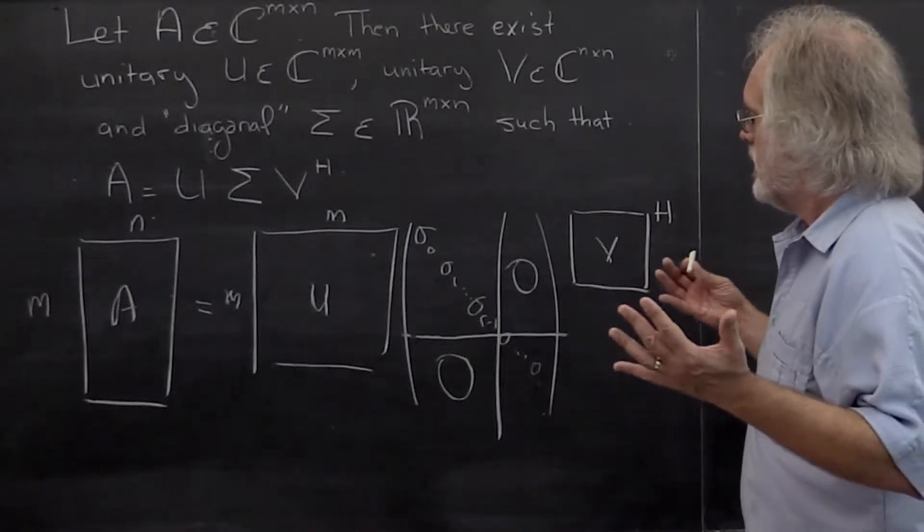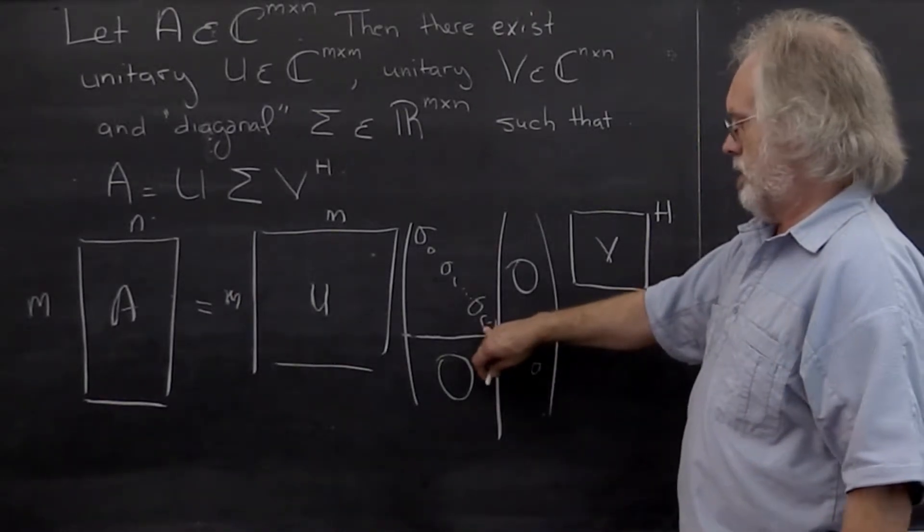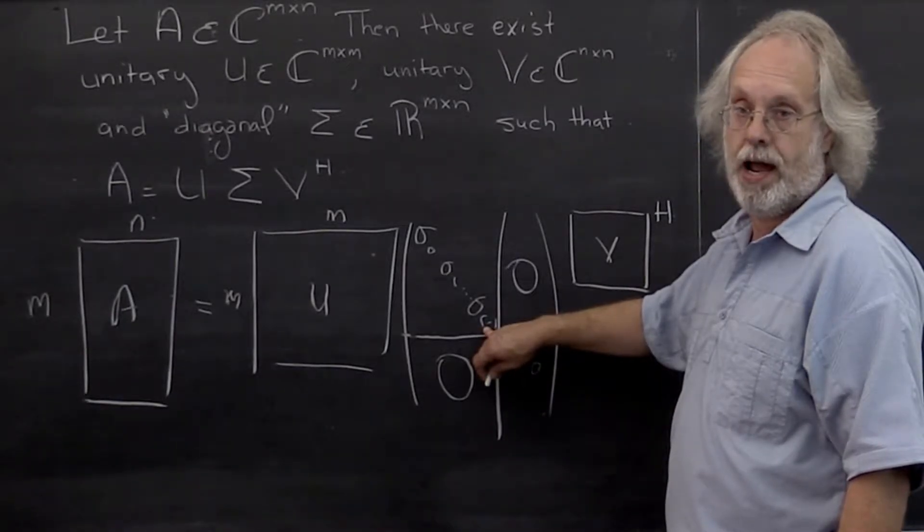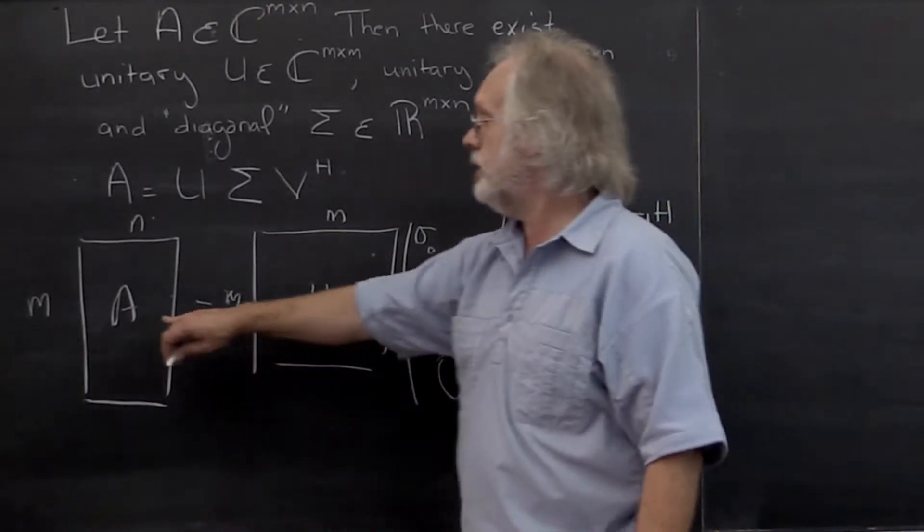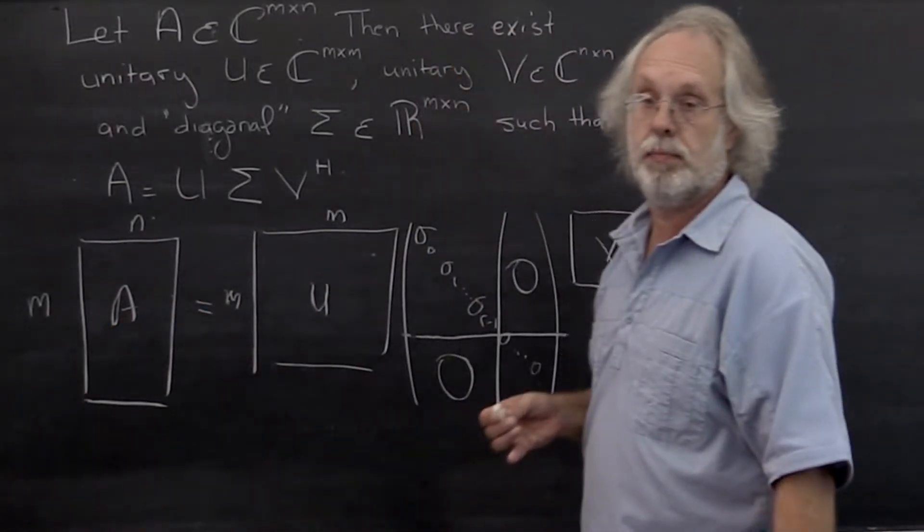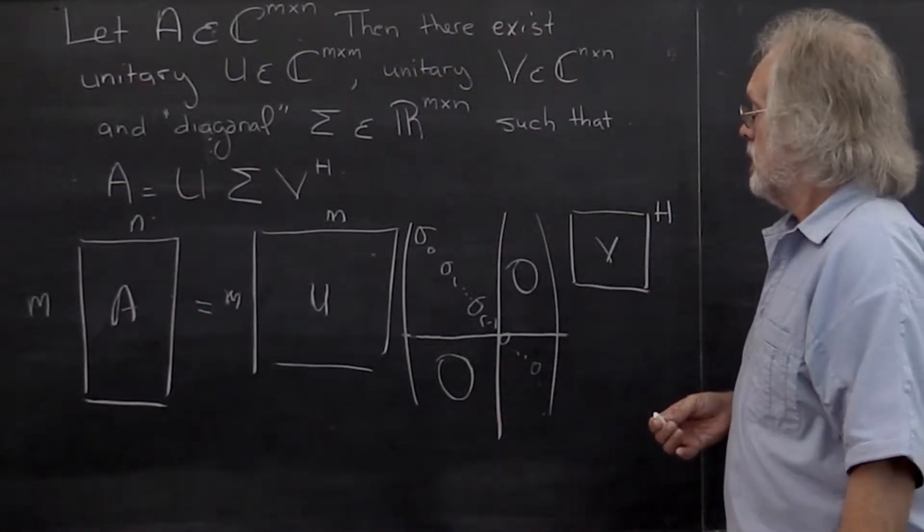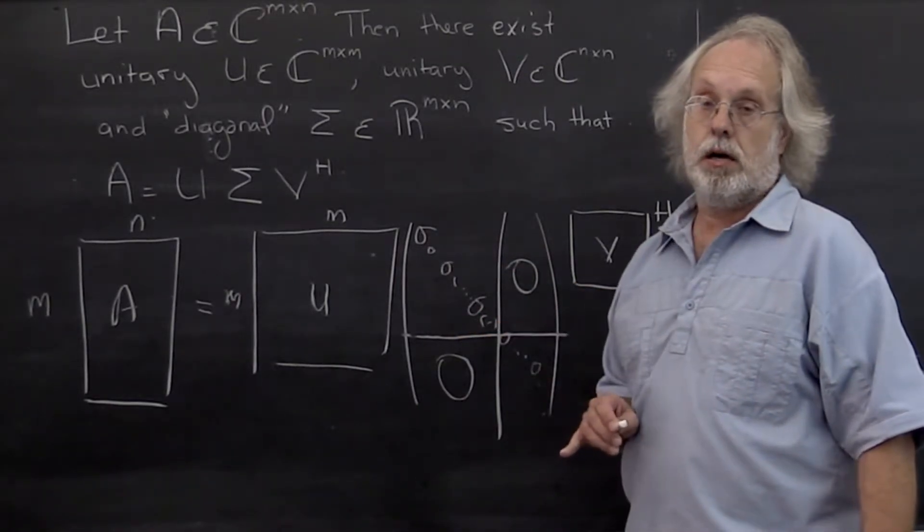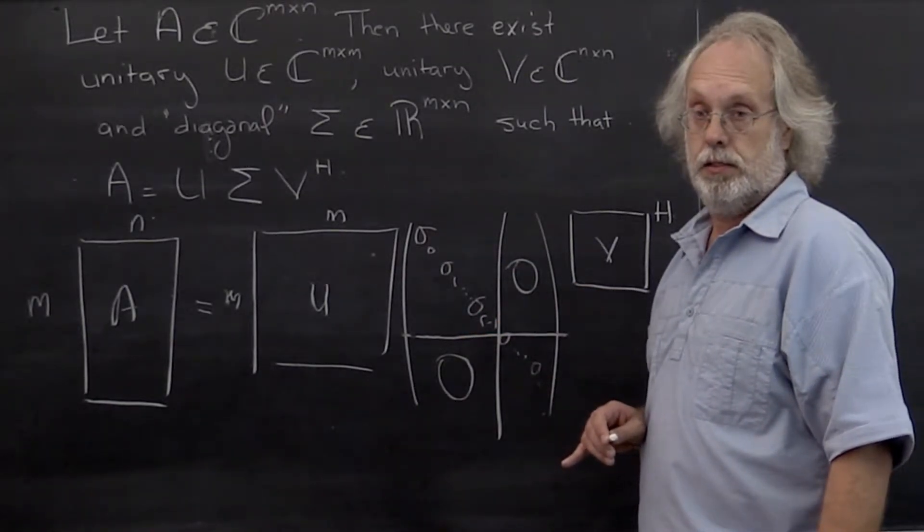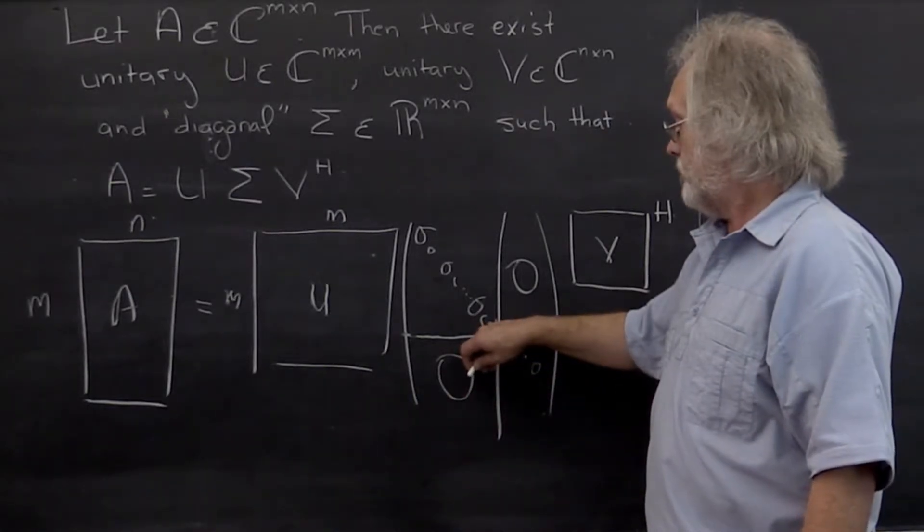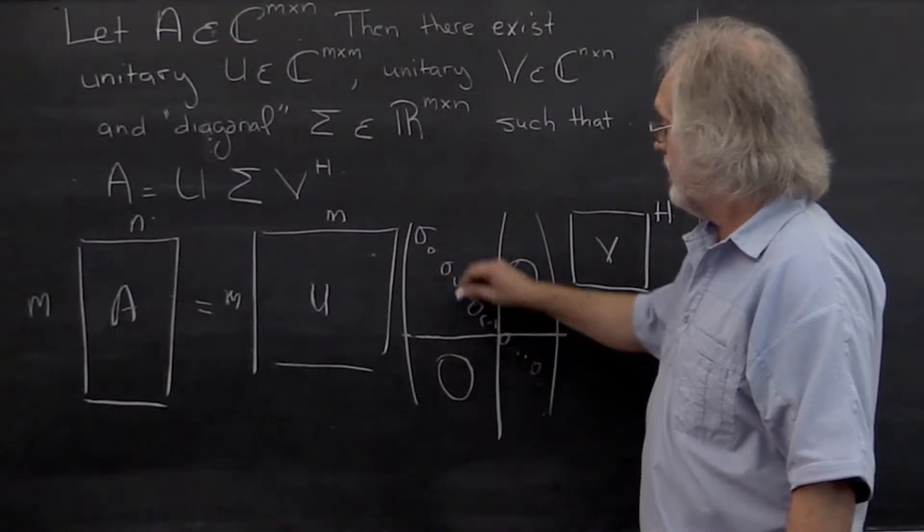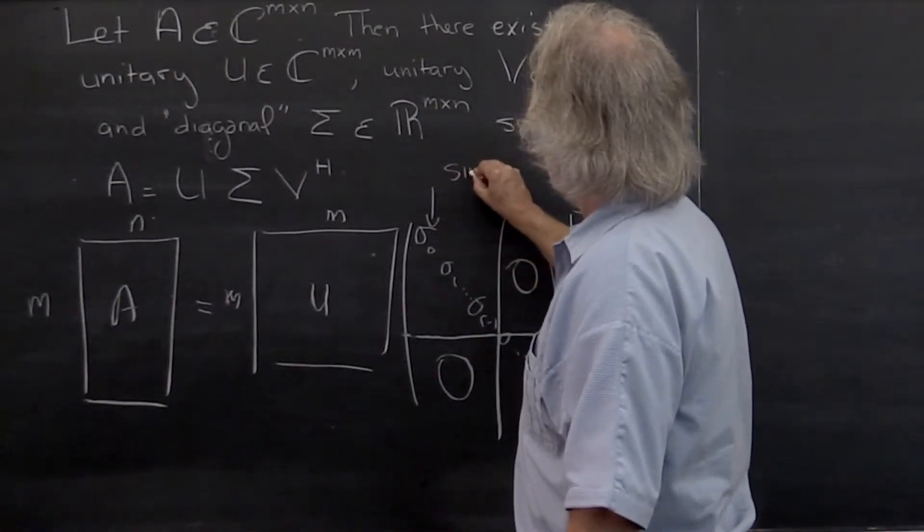Now R, we're going to find out, is actually equal to the rank of the matrix. Remember, the rank of the matrix is the number of linearly independent columns that matrix A has. These values right here are all positive. So if matrix has rank R, then all of these values are positive. And these values are known as the singular values.